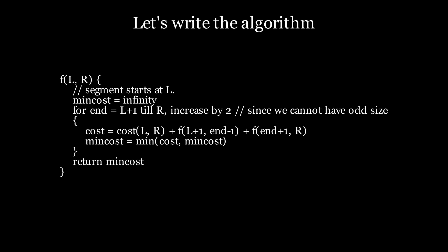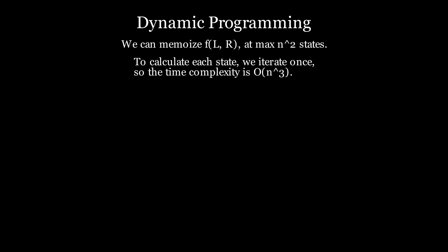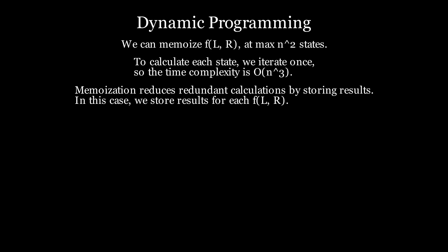But this still runs in exponential time complexity. So we apply once again a really good programming concept, Dynamic Programming. Suppose N is the size of the expression. L comma R can only have at most N squared different values, which means there can only be N squared states for this particular function, such as f of 0 comma 1, f of 0 comma 2 and so on. Instead of computing it every time over and over, once we have computed a particular segment, we can store the answer. To calculate each state, we iterate only once. So the time complexity just goes down from exponential down to N cubed.